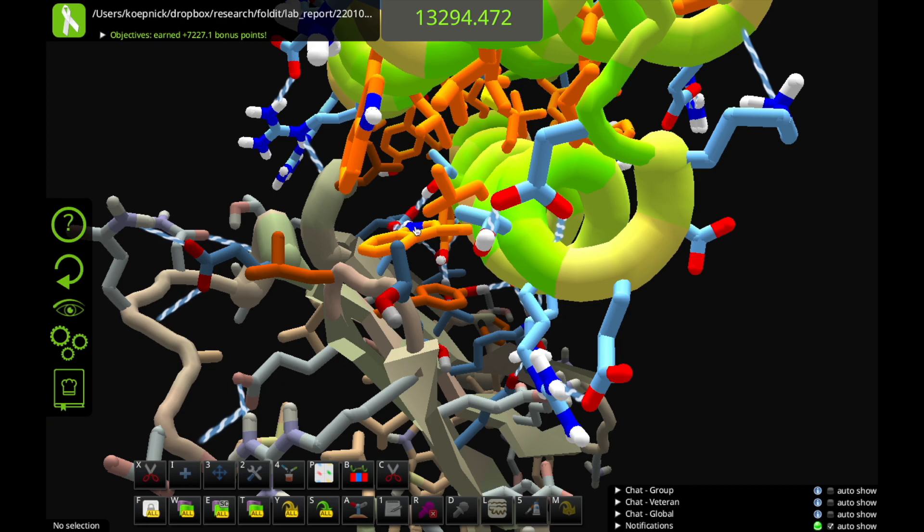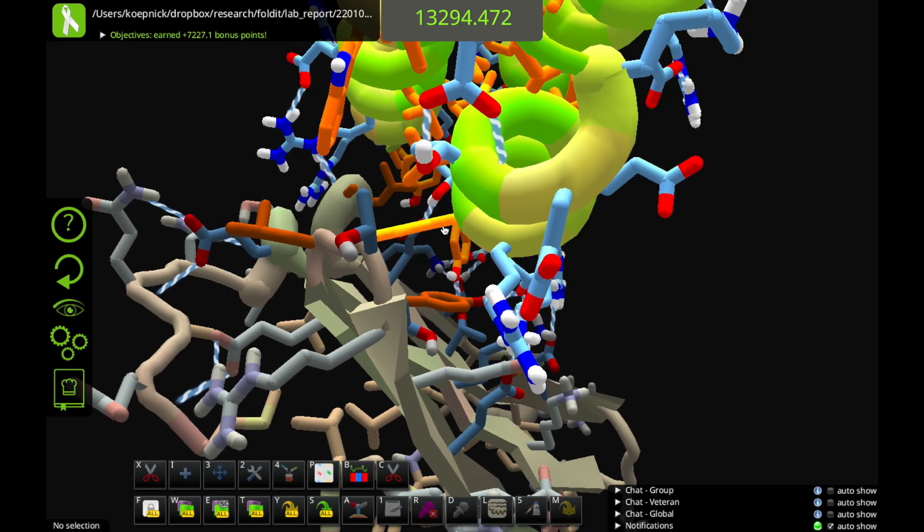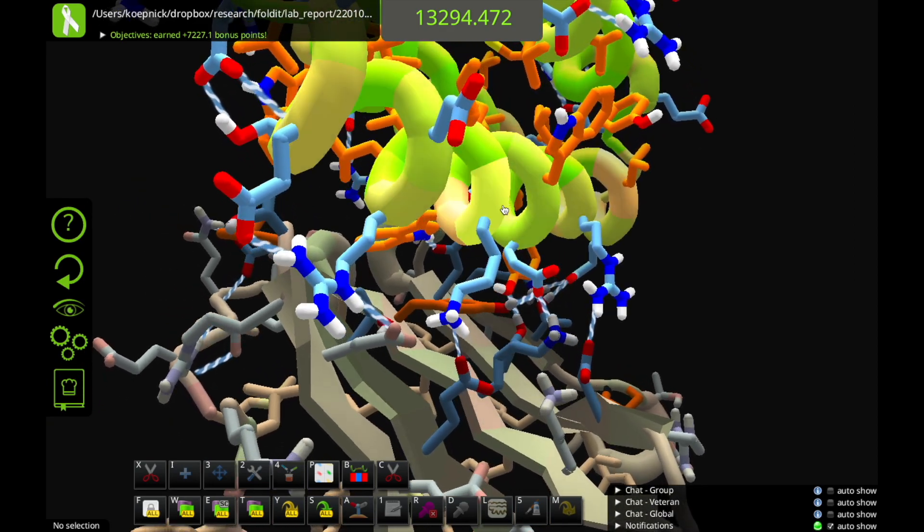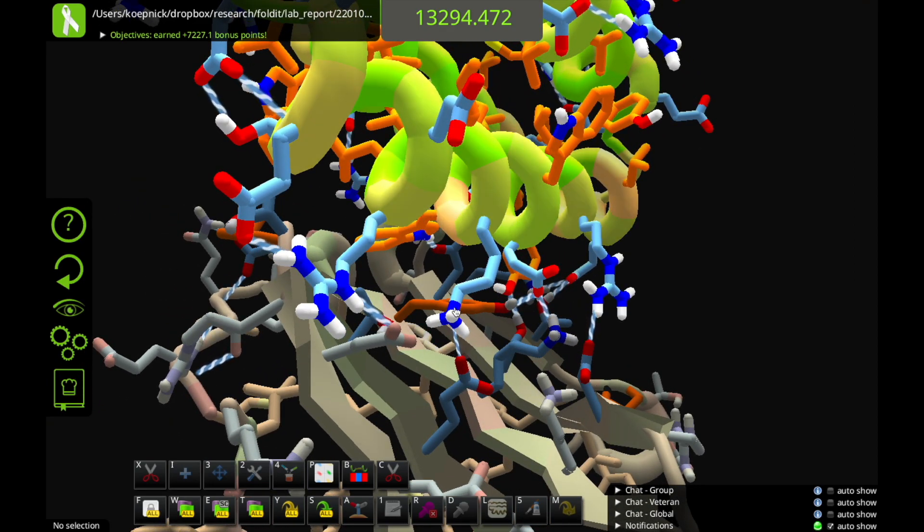So here is a delicate balance between binder folding and being able to stick to the target. So these exposed hydrophobics will make for sticky binding to the target, but they could also confound folding. If there's too many surface hydrophobics, then this protein might aggregate or misfold or stick to other things in the cell that are not this target.